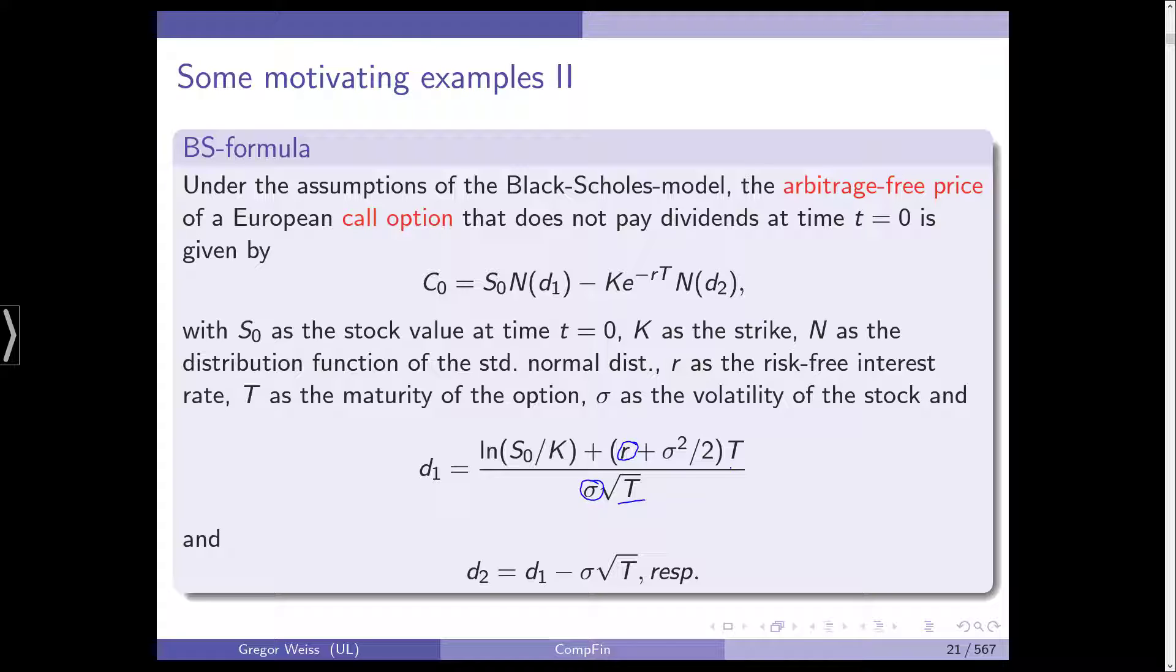Volatility, risk-free rate, the current stock price, the strike, and the maturity of the option. All these parameters drive the option price, and we have the formula, and if we are given the parameters, we can simply put in those numbers into the formula, and we get the exact solution for the arbitrage-free price of that option.